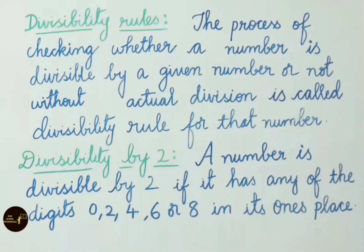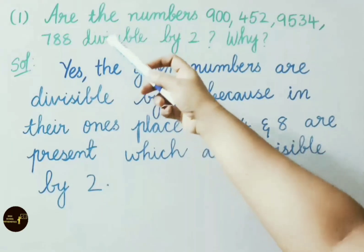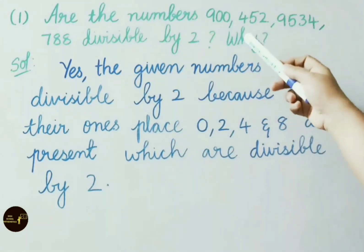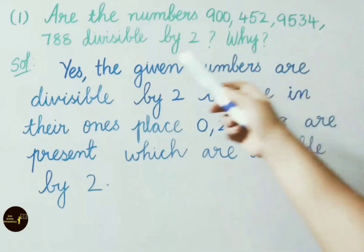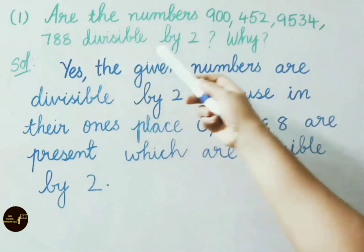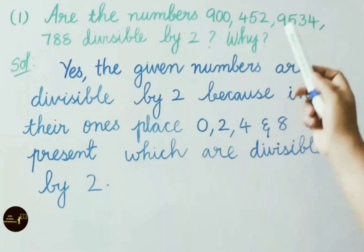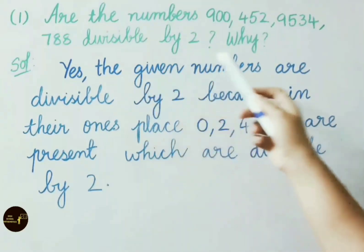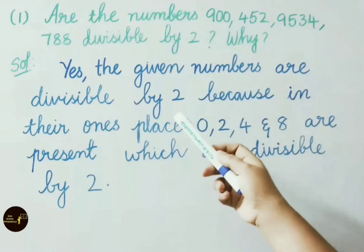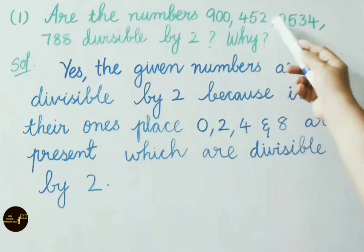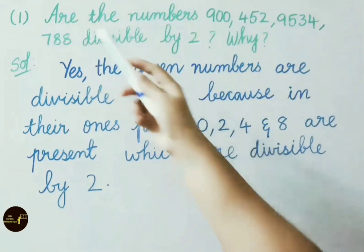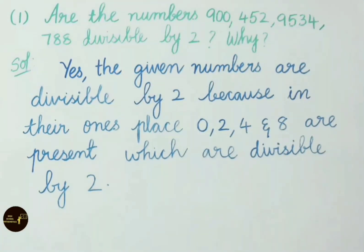Now let us see example sums on divisibility by 2. First question: Are the numbers 900, 452, 9534, 788 divisible by 2? Why? The given numbers are divisible by 2 because in their ones place 0, 2, 4 and 8 are present. So the given numbers are divisible by 2.